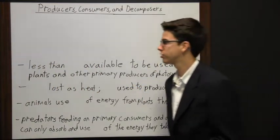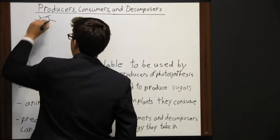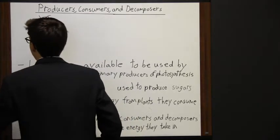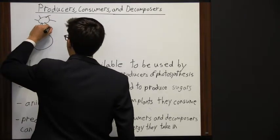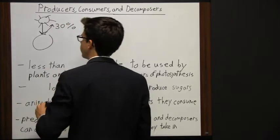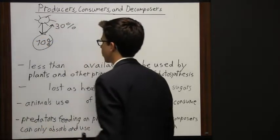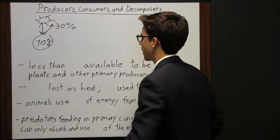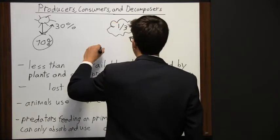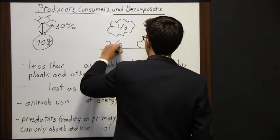Energy from the Sun comes down to Earth. We have the Sun up here and the Earth, and that energy is coming down to Earth. About 30% of that energy is reflected back into space, so only 70% of that initial energy actually makes it to Earth. Of that 70%, about one-third is absorbed by clouds, so only about two-thirds of it makes it to Earth's surface.